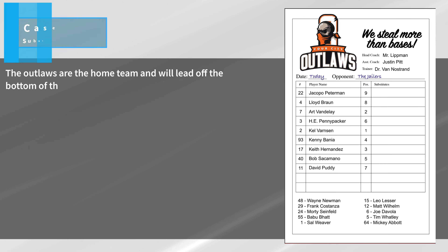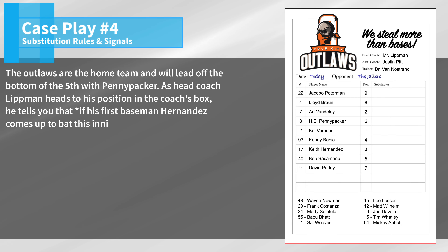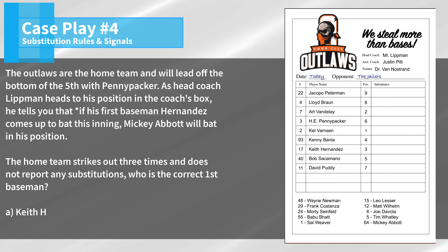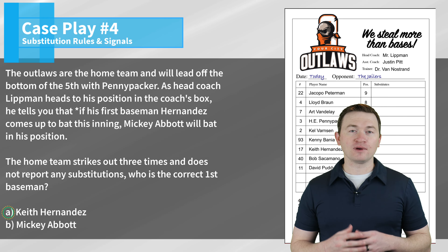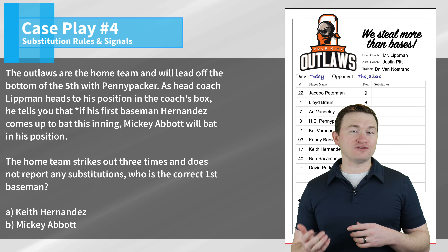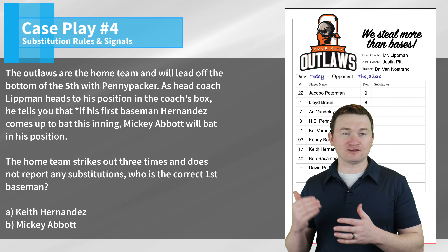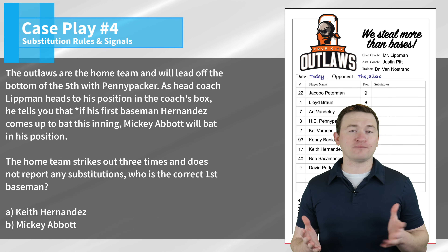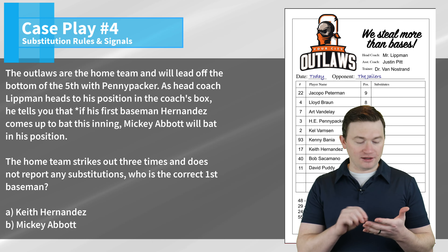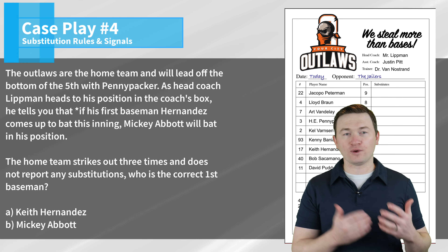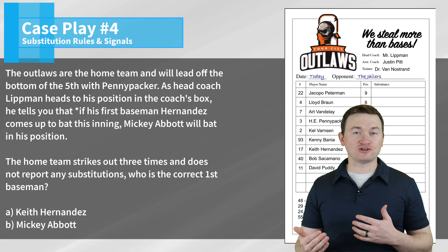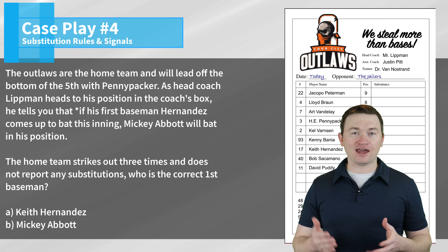Case play number four: the Outlaws are the home team and will lead off the bottom of the fifth with Penny Packer. As head coach Lippman heads to his position in the coach's box, he tells you that if his first baseman Hernandez comes up to bat this inning, Mickey Abbott will bat in his position. The home team strikes out three times and does not report any substitutions. The correct first baseman is Keith Hernandez. A coach can give you a projected substitution that may occur, but you don't need to write it down or tell him he can't do that — he's just giving you a heads up. Since we never got to that position in the lineup and the offensive substitution never occurred, Keith Hernandez is still in the game at first base.